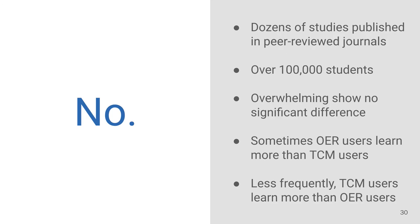That's true if you look at dozens of studies published in peer-reviewed journals that in aggregate include over 100,000 students. These overwhelmingly show no significant difference in learning. Sometimes students who used OER have better learning outcomes than students using traditionally copyrighted materials, but the overwhelming majority of these studies show no significant difference.